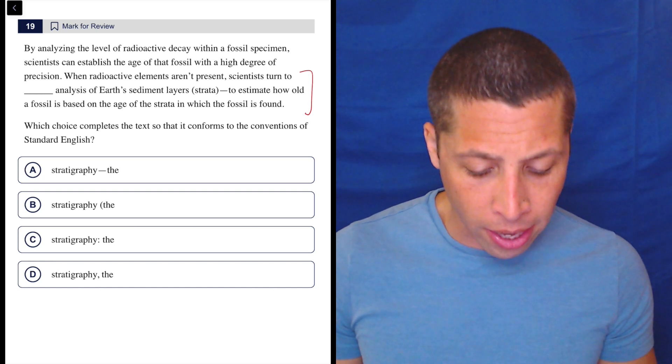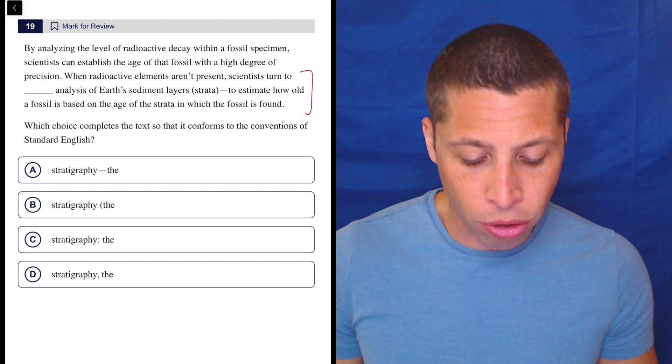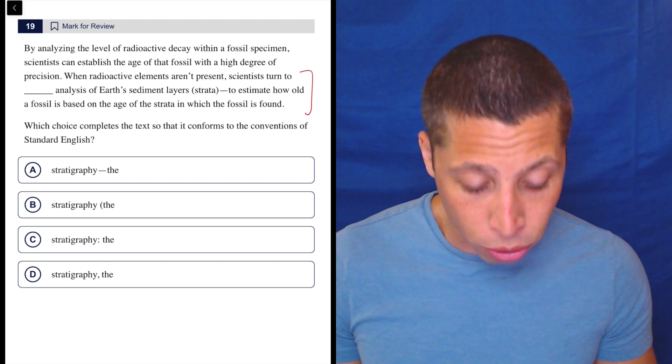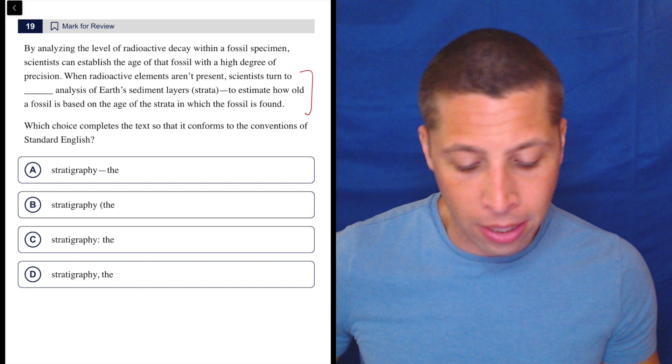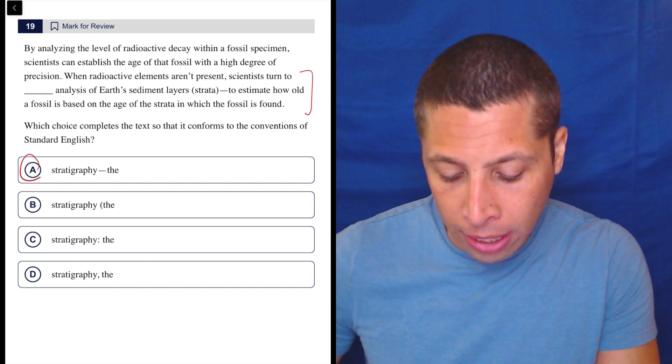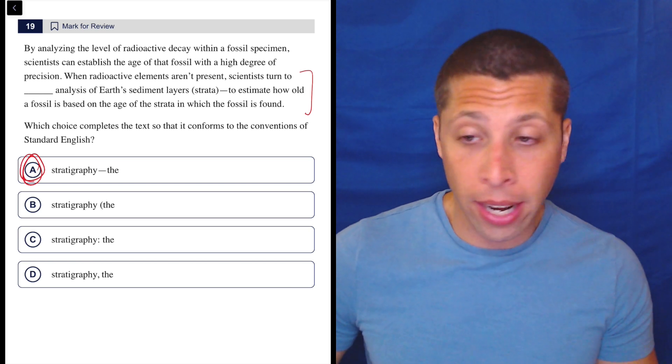When radioactive elements aren't present, scientists turn to stratigraphy—I don't know how to say that—the analysis of earth sediment layers, strata, to estimate how old a fossil is based on the age of the strata in which the fossil is found. I think most of you are going to have a very natural inclination to pick A here. That is the right answer.